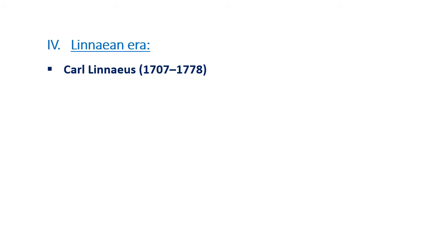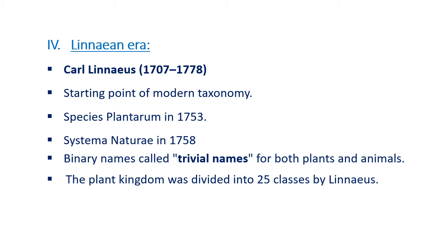Now the Linnaean era. Carolus Linnaeus marks the starting point of modern taxonomy. He published Species Plantarum in 1753 and Systema Naturae in 1758. For the first time he used binary names — binomial names — both for plants as well as animals, and he classified the plant kingdom under 25 classes.